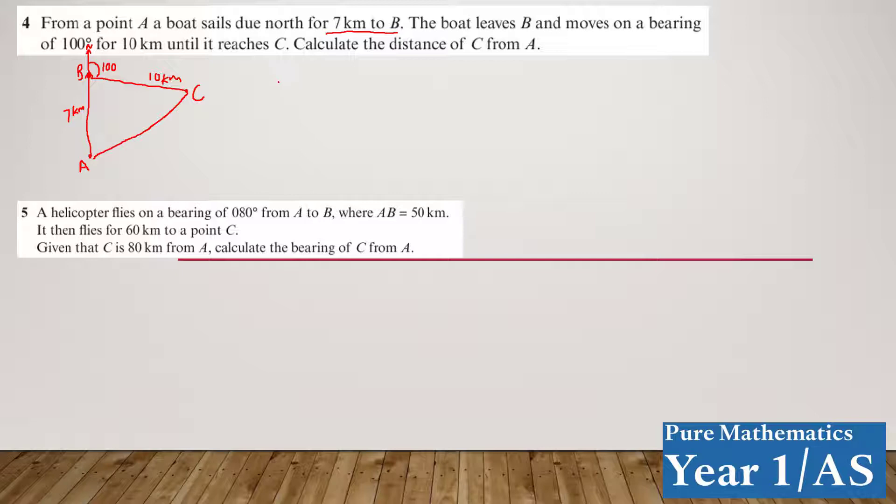Now, you're going to calculate the distance of C from A. So you have to use the cosine rule, which is B squared equals A squared plus C squared minus 2AC cos B. You want the length opposite angle B. Now, you know angles in a straight line equal 180, so this must be 80 degrees. So we have the value of B equals 80.